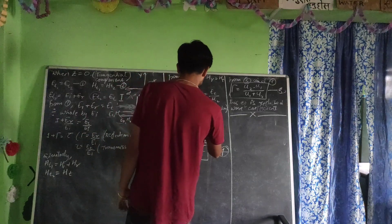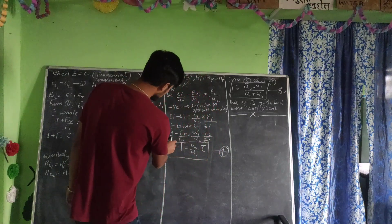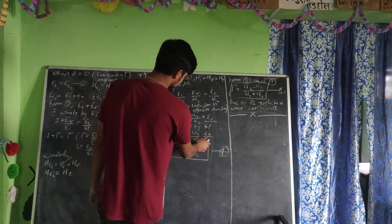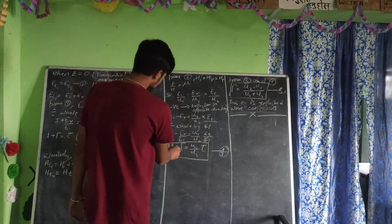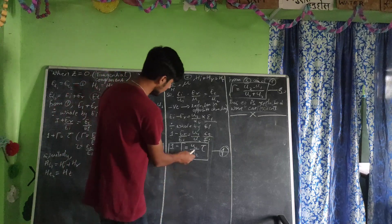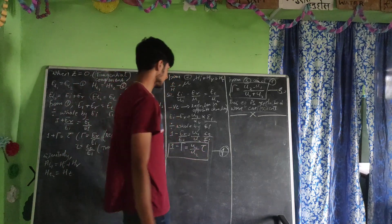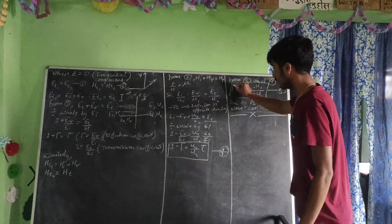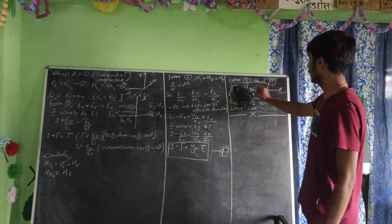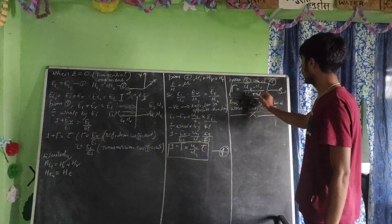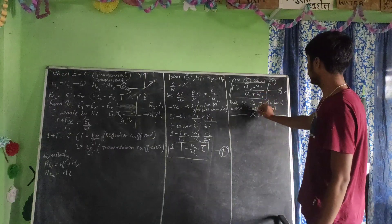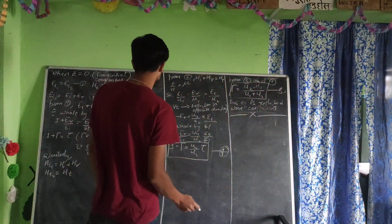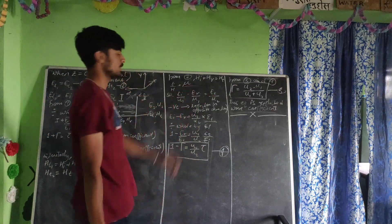Since E_r over E_i equals gamma and E_t over E_i equals tau, from equations three and four combined, we get the reflection coefficient: gamma equals (eta_2 minus eta_1) divided by (eta_1 plus eta_2). This equation gives the reflection coefficient, and the corresponding transmission coefficient tau equals 2*eta_2 divided by (eta_1 plus eta_2). These are the standard reflection and transmission coefficients for normal incidence of electromagnetic waves.